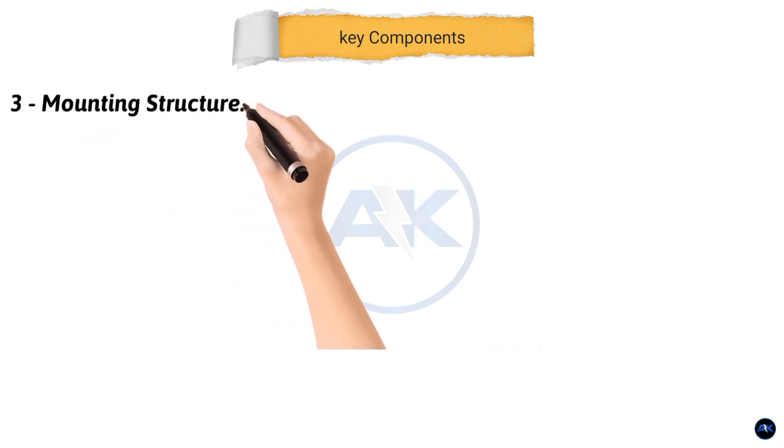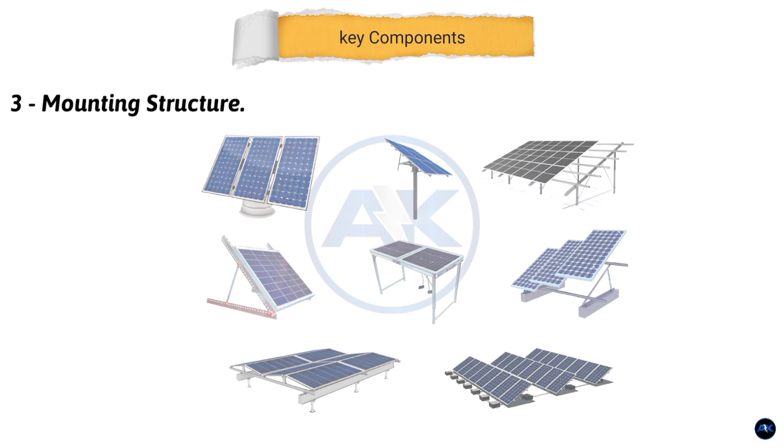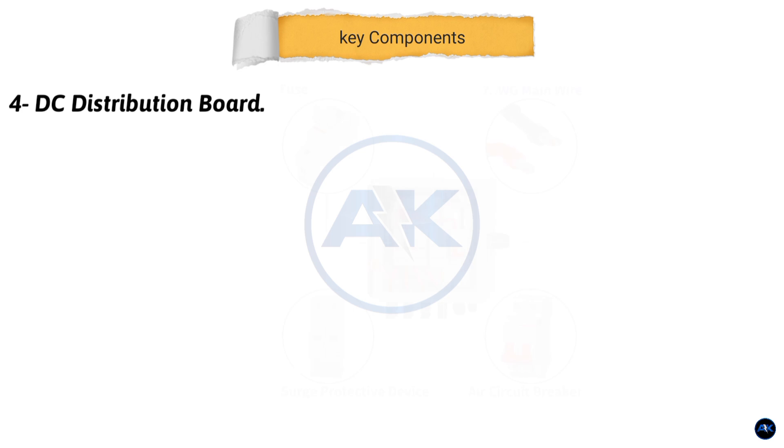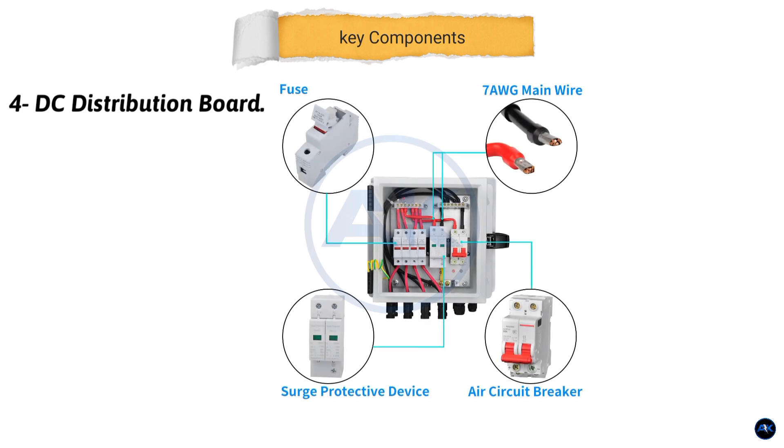Third, mounting structure. This secures the panels to your roof or ground. We'll be using roof-mounted structures. Fourth, DC distribution board or DCDB. This houses the fuses or breakers for the DC side of the system, protecting the solar panels and inverter.